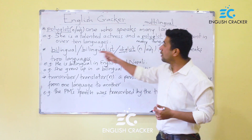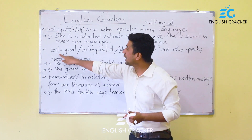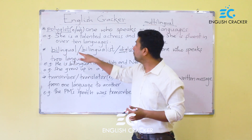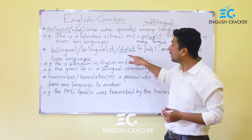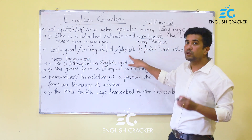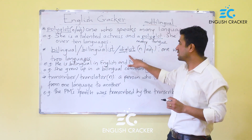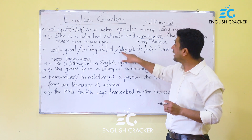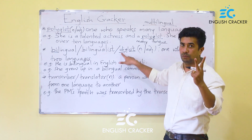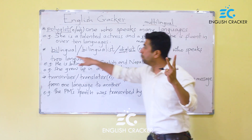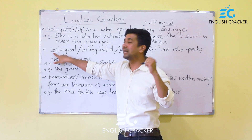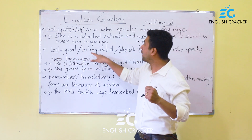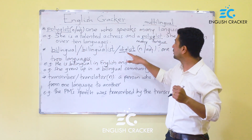The second word is bilingual — also called bilingualist or diglot. All of these mean the same thing. The prefix 'di' means two, and 'bi' also means two. So bilingual, bilingualist, and diglot all refer to someone who speaks two languages.